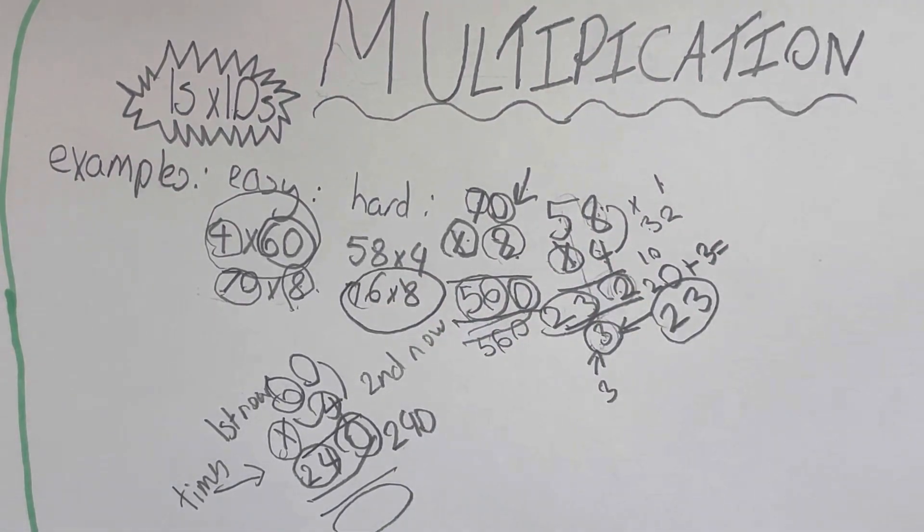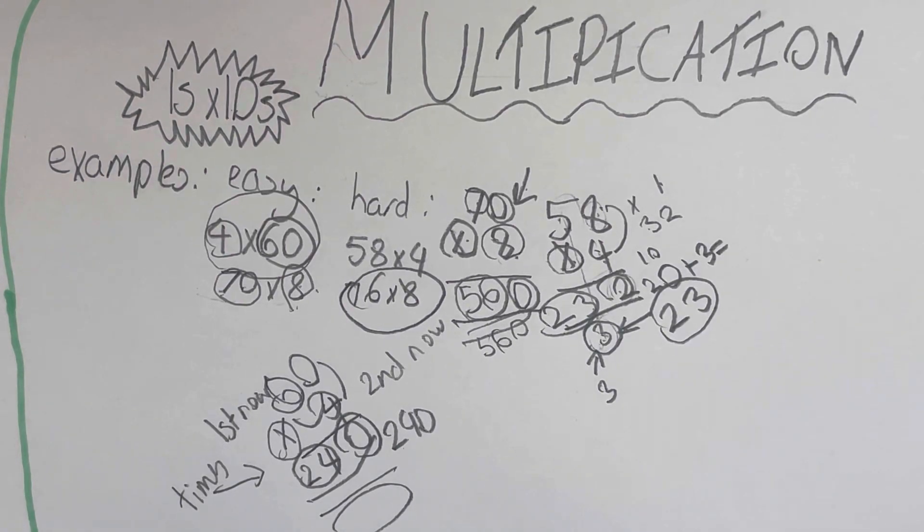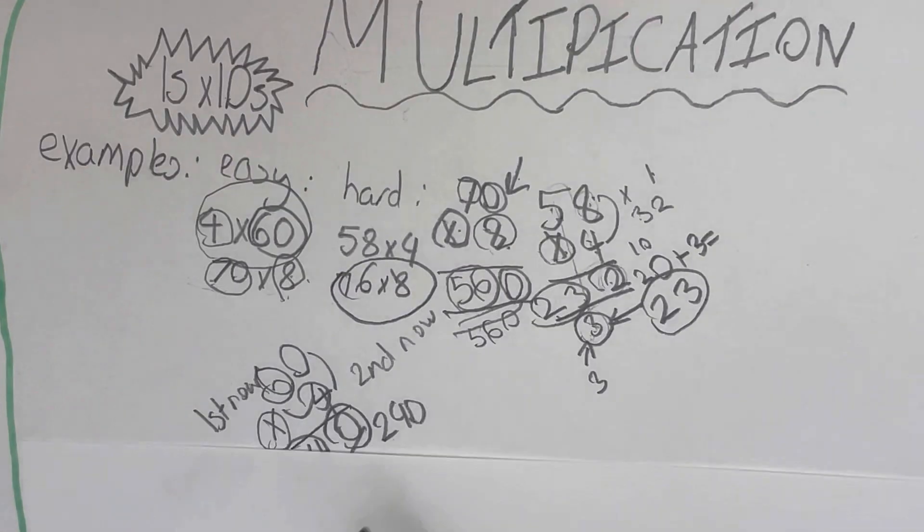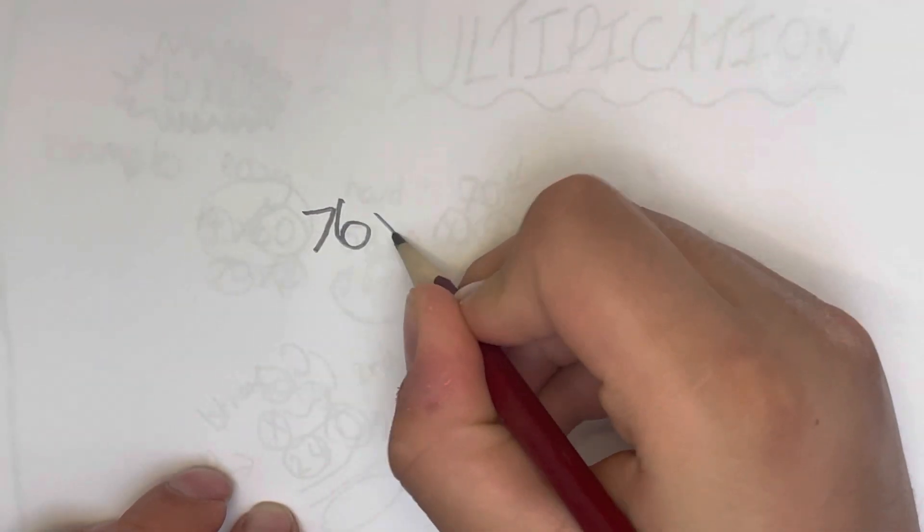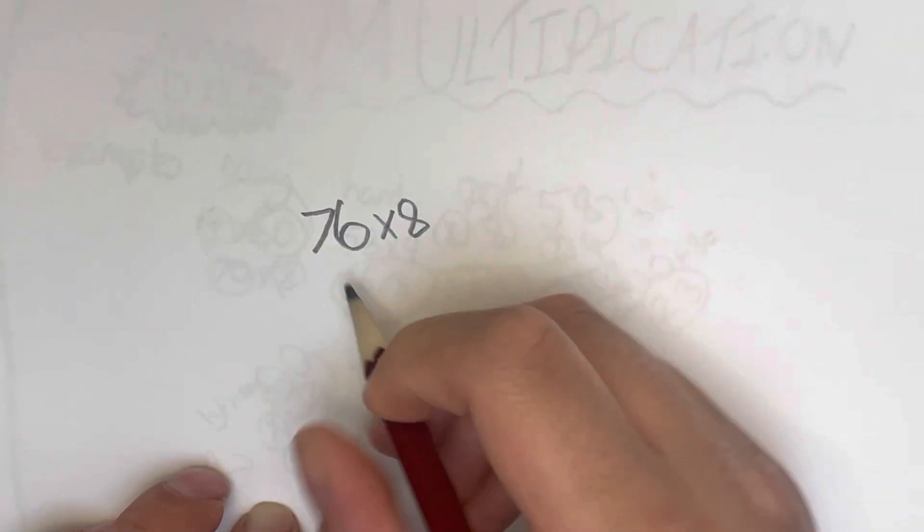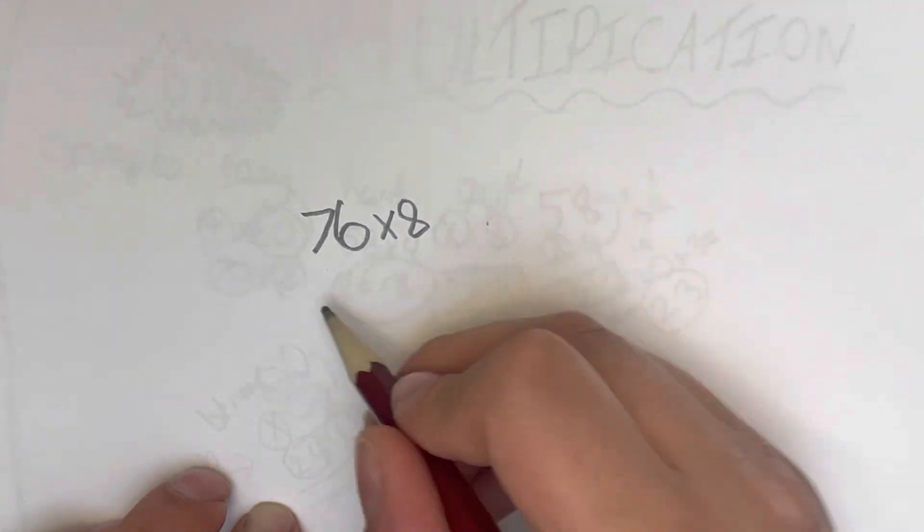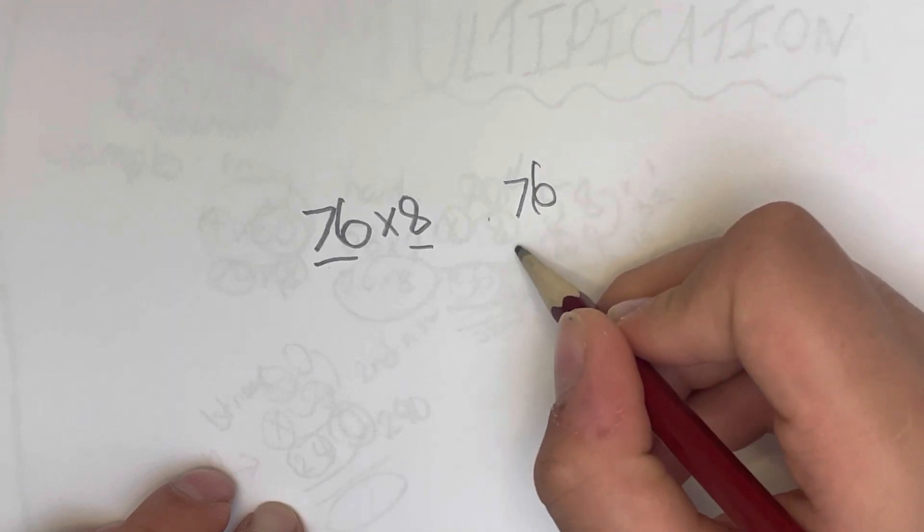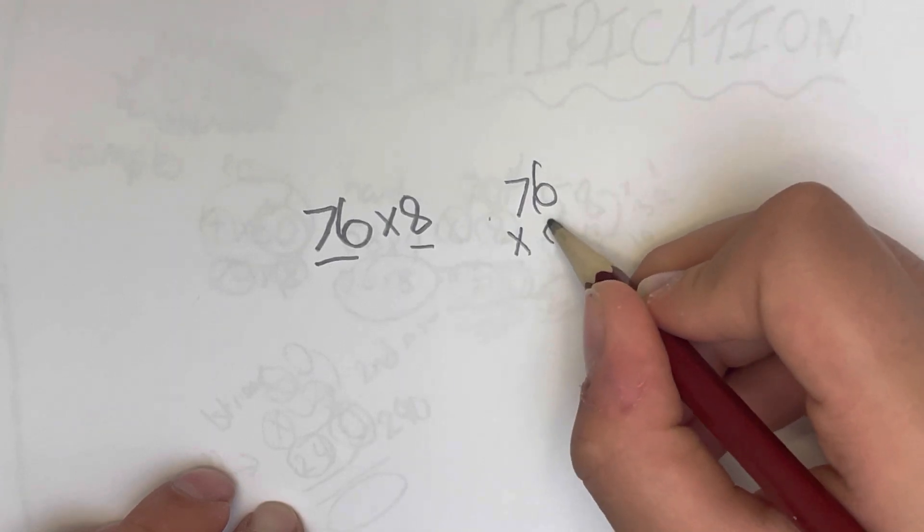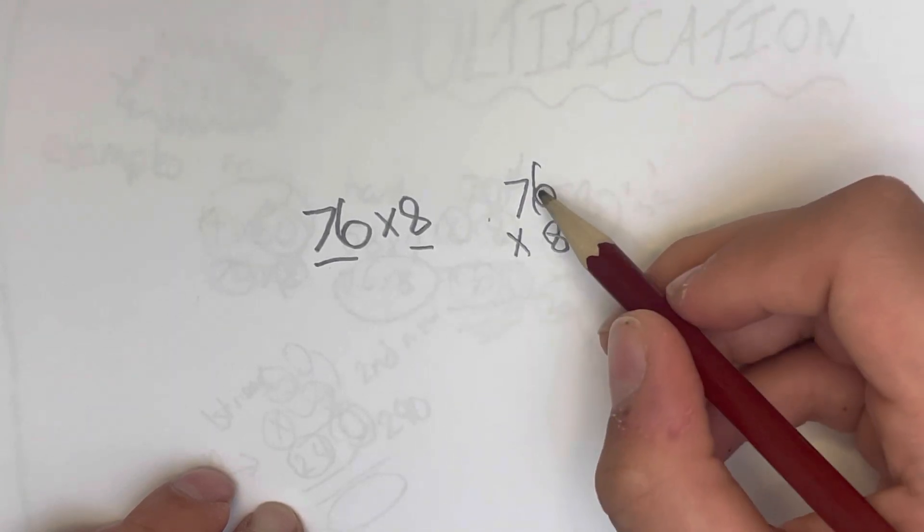We're going to do our second hard one. So for the second hard one, we're going to move to a new piece of paper. The second hard one is 76 times 8. So as we know, our first row and our second row, so 76 times by 8.